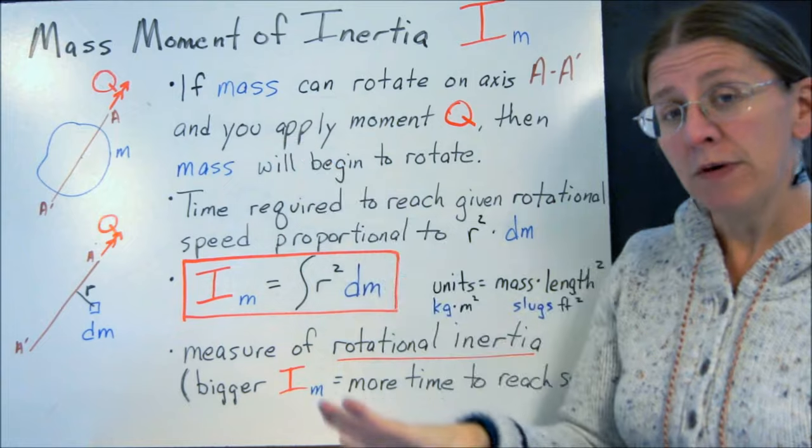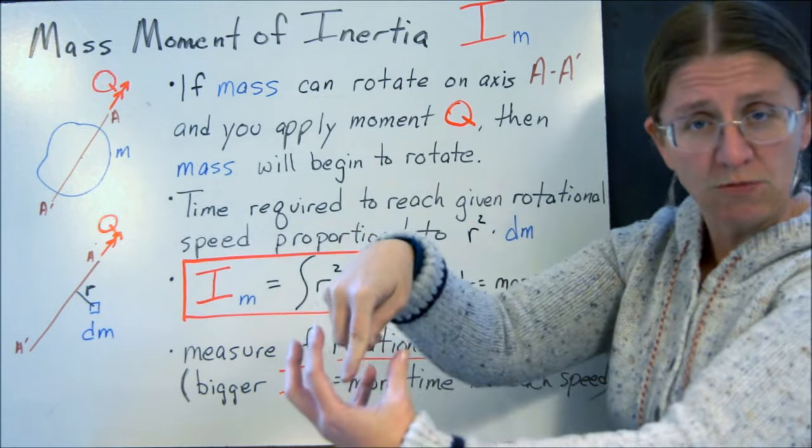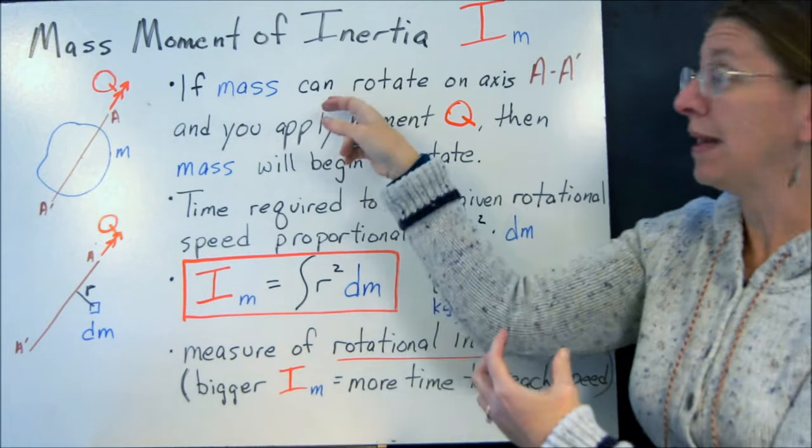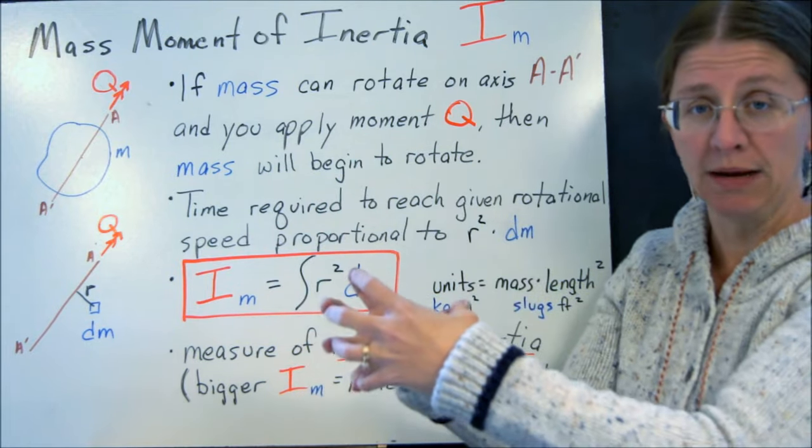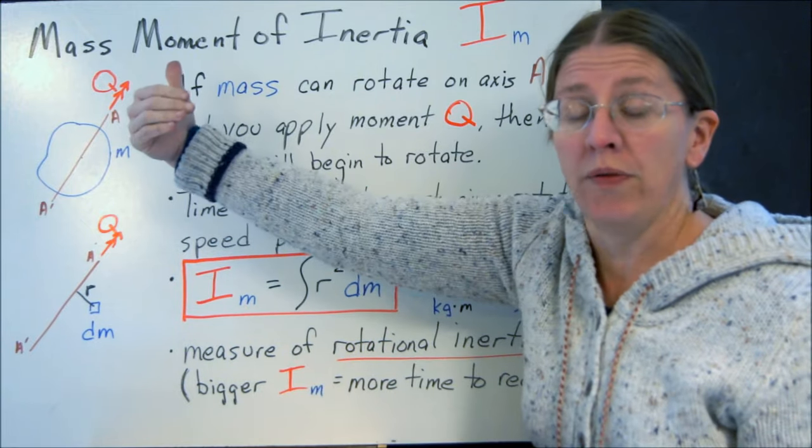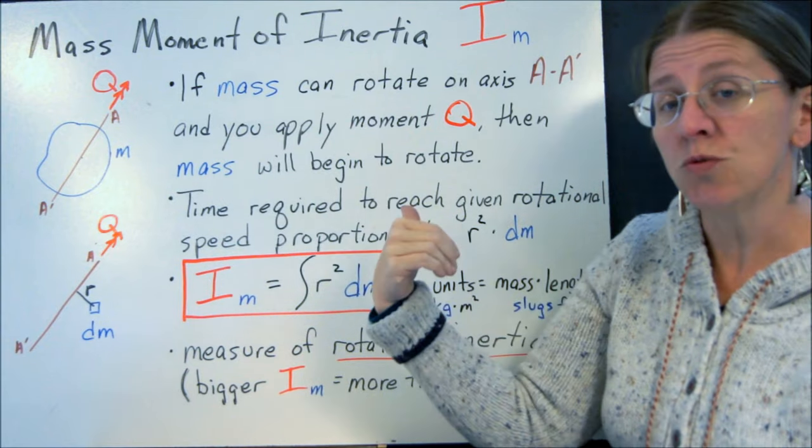A mass moment of inertia works like this. If you consider any sort of mass, a potato with an axis running through it, and you start to twist it. Now let's assume that it can rotate, so it's not clamped down. If it can rotate and you start putting that Q on there, then it will begin to rotate.